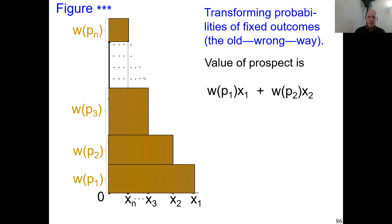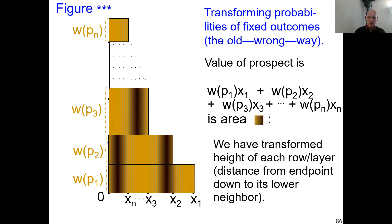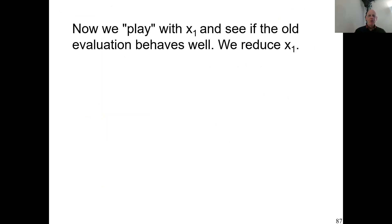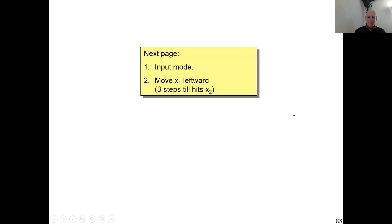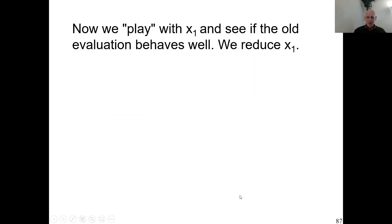I replaced all the p values by the w values—that is the brown area. As I already said, the distance from each point to its lower neighbor has been transformed. Now we're going to play with these formulas and figures. I'm going to play with the lottery. I'm going to change the outcome x1 and see how that affects the value of the lottery. We'll see that something strange happens, but that will be in the next recording.